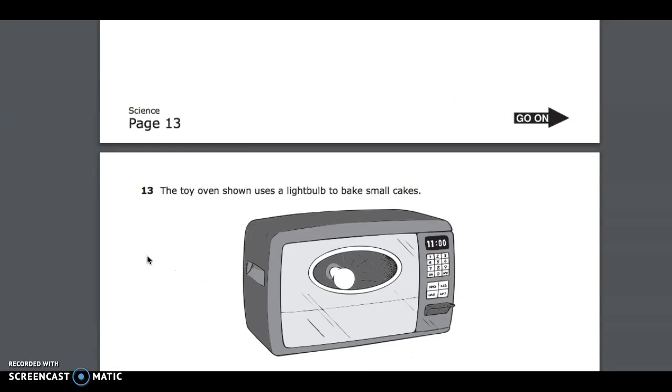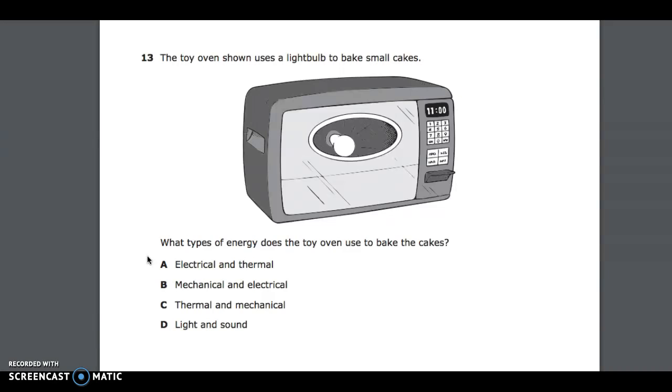Number 13. The toy oven shown uses a light bulb to bake small cakes. What type of energy does the toy oven use to bake the cakes? A, electrical and thermal; B, mechanical and electrical; C, thermal and mechanical; D, light and sound.